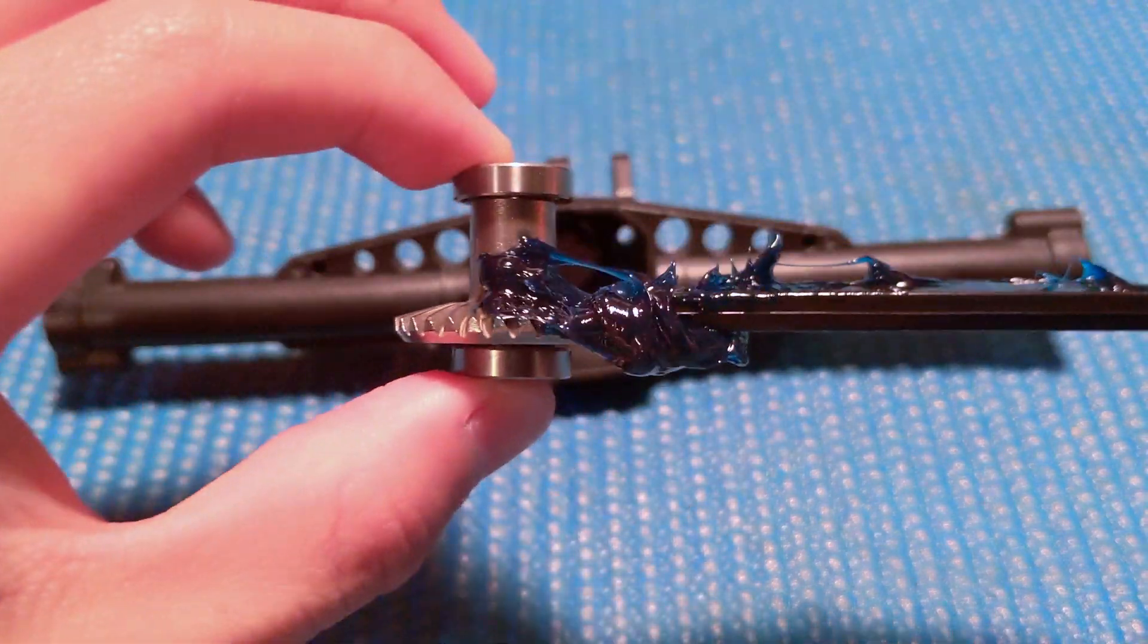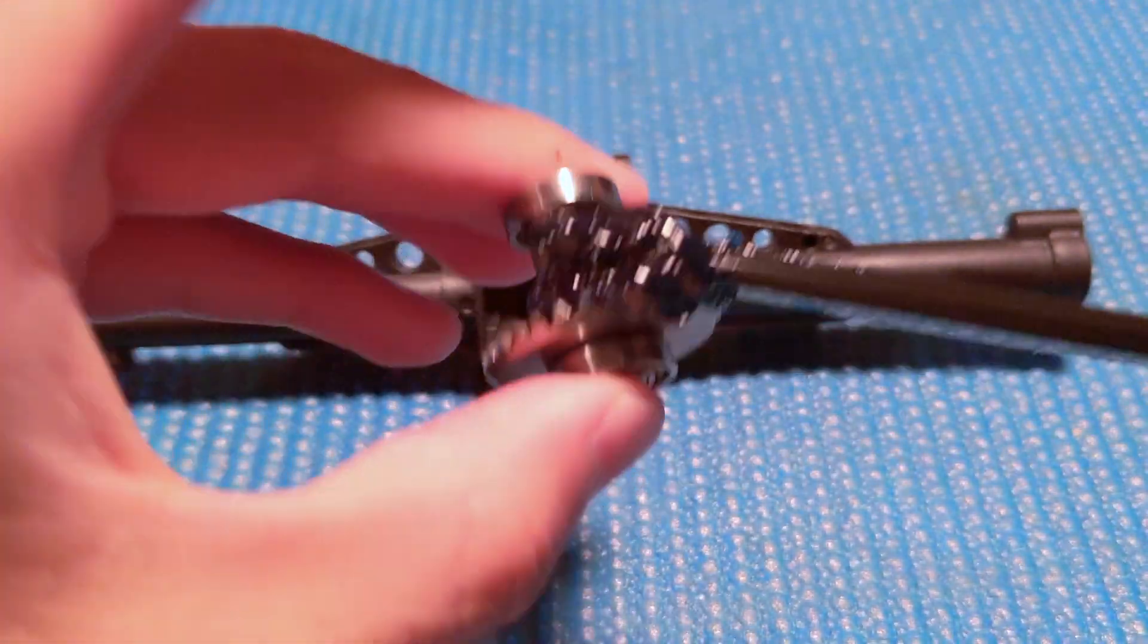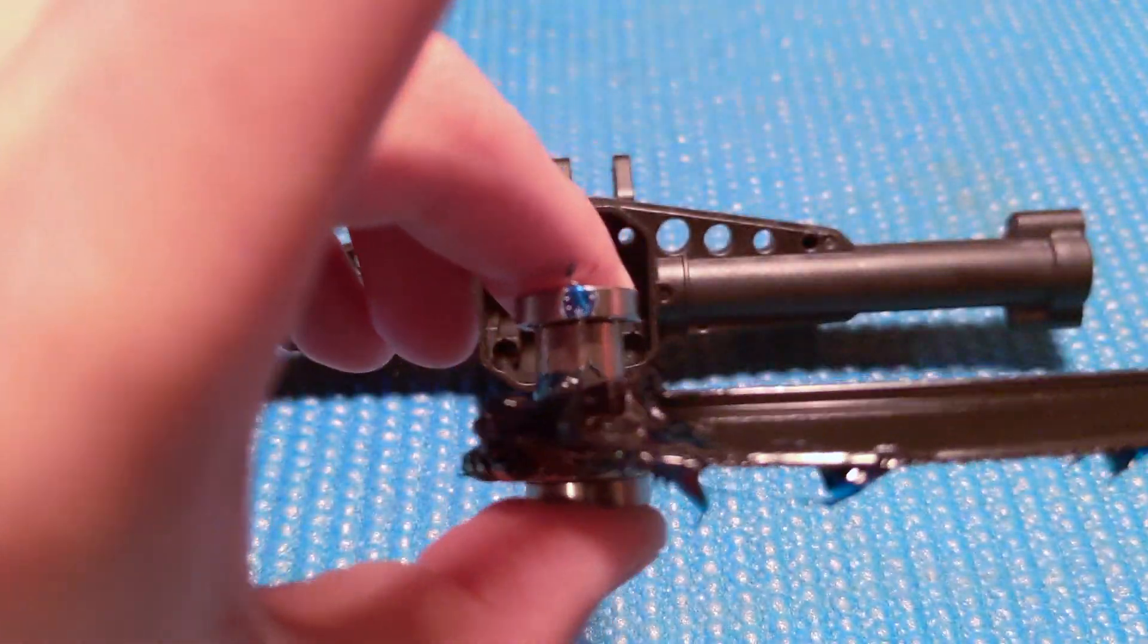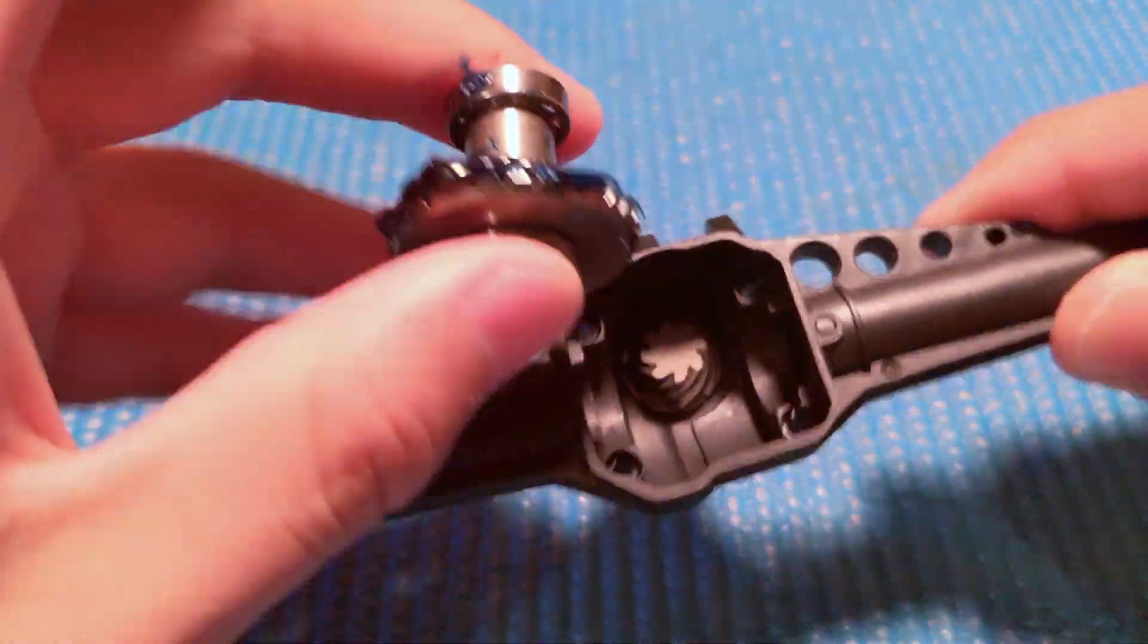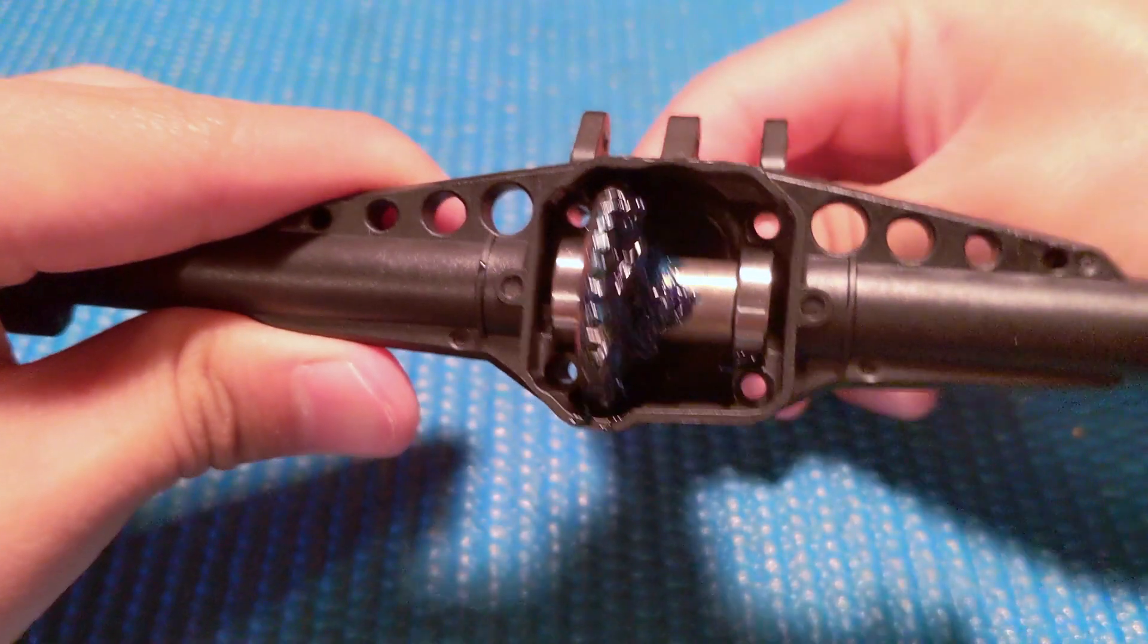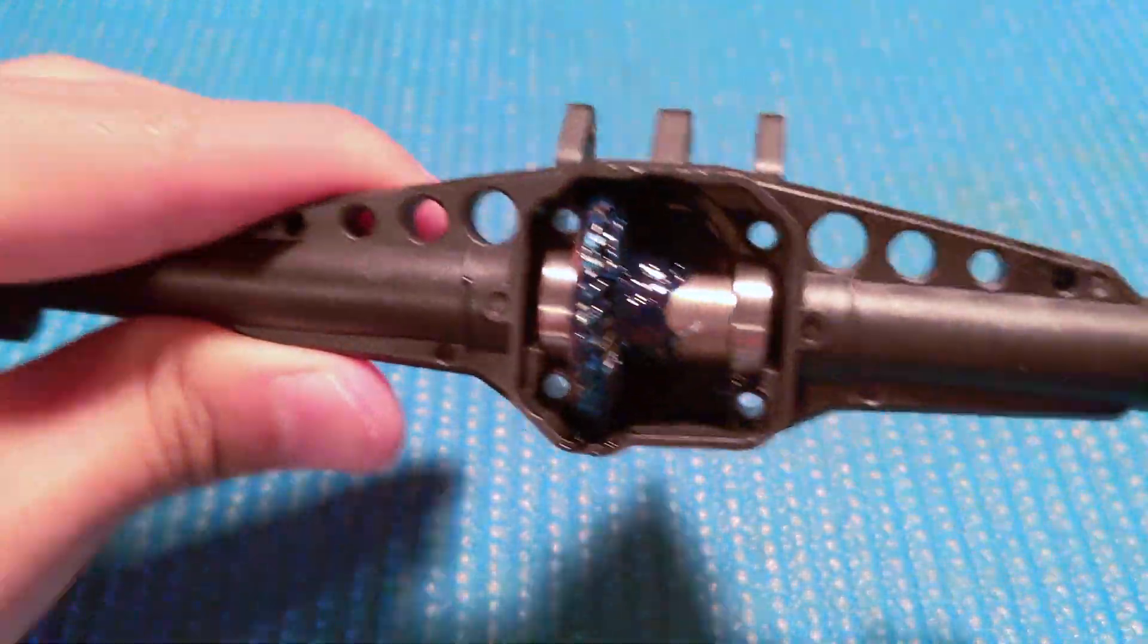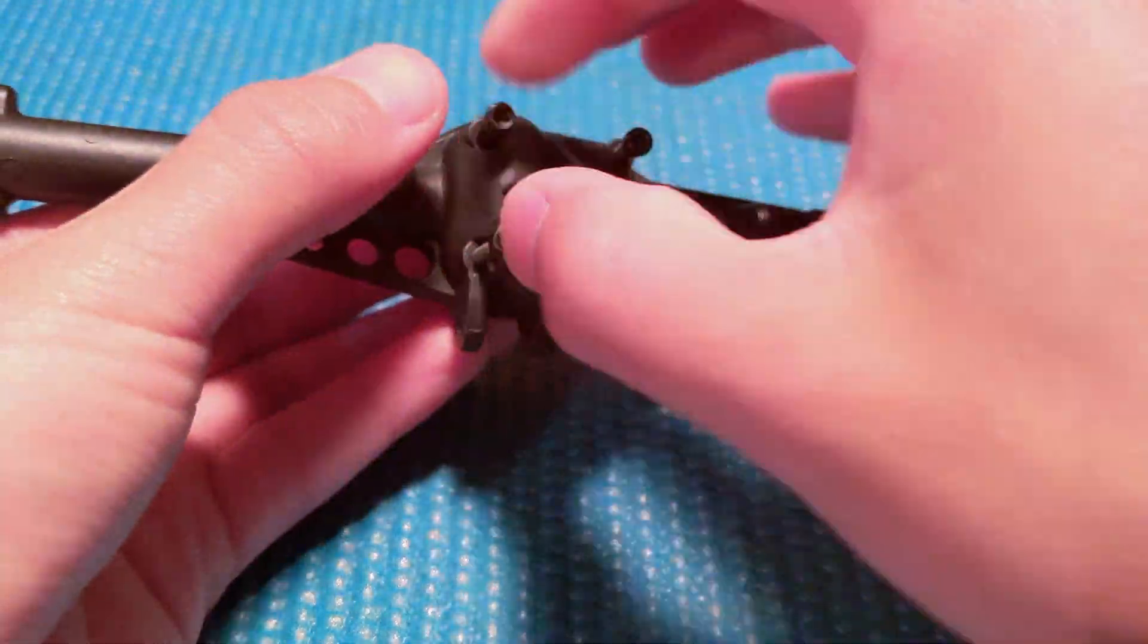Then, add a dab of grease on the gear and slide the ring gear into the housing. Now, you can install the diff cover and secure the four screws holding it.